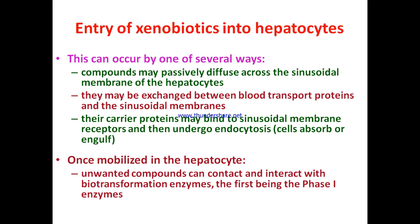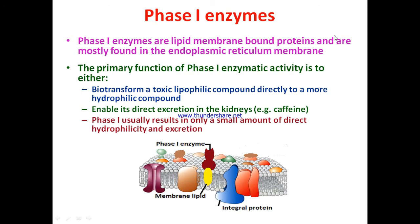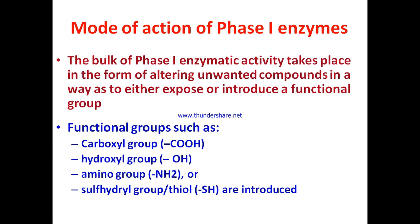Once mobilized into the hepatocyte, the unwanted compounds come in contact with the active site of enzymes — first phase one enzymes, then phase two. Phase one enzymes are lipid membrane-bound proteins, mostly found in the endoplasmic reticular membrane. The primary function of phase one enzyme activity is to biotransform a toxic lipophilic compound directly to a more hydrophilic compound enabling direct excretion in the kidneys, though phase one usually results in only a small amount of direct hydrophilicity.